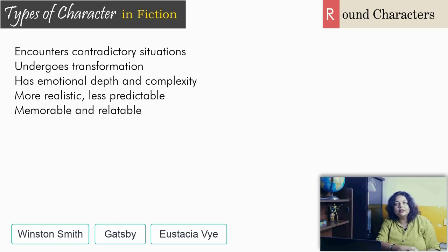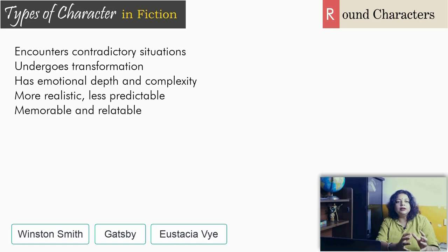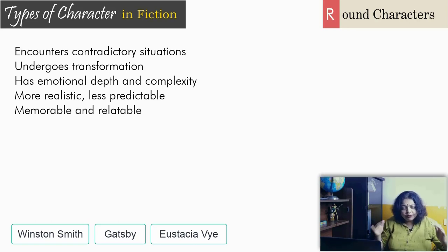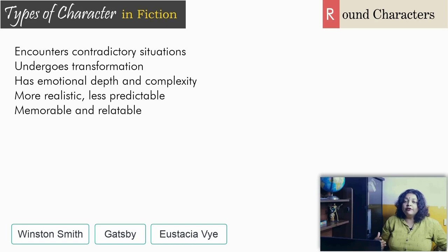In Return of the Native, Clym Yeobright is a round character, and Eustacia is definitely round. There are stock characters too — the natives with their instinctive wisdom — and flat characters like the Reddleman Diggory Venn, whose whole character is built on a single emotion of being good. Flat characters may be good characters, but their goodness has no dimension. With round characters you have more realistic characterization — they are so unpredictable, they are like real human beings; you don't know what they're going to do next.